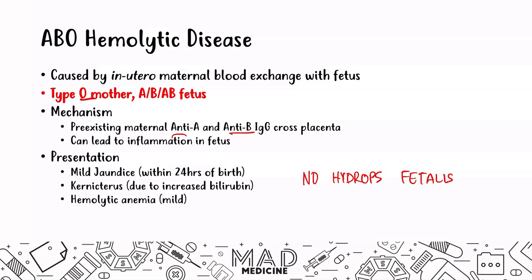The absence of hydrops fetalis is why the RH hemolytic disease of the newborn is considered much more severe than the ABO hemolytic disease, especially in severe cases. Treating ABO hemolytic disease is straightforward — once the baby is born, the maternal antibodies will eventually be cleared from circulation. To prevent adverse effects in the child, you can use phototherapy and exchange transfusion. Phototherapy converts bilirubin into lumirubin, clearing it from the body and preventing adverse effects.